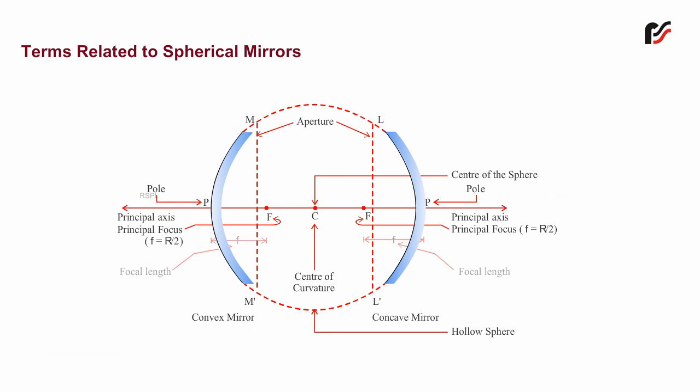g. Focal length. Distance F between the pole and the principal focus of the spherical mirror is the focal length.